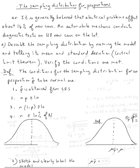The topic is the sampling distribution for proportions. So let's do this example. It is generally believed that electrical problems affect about 14 percent of new cars. So what does that mean? The proportion for population is 14 percent, 0.14.